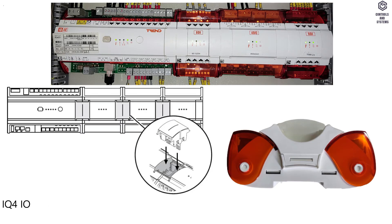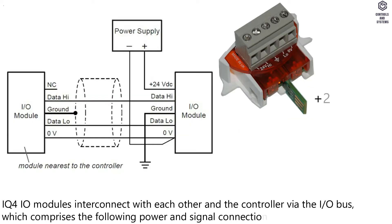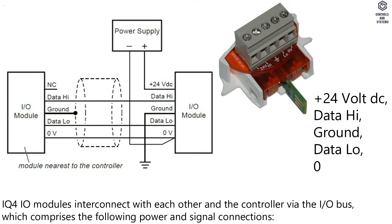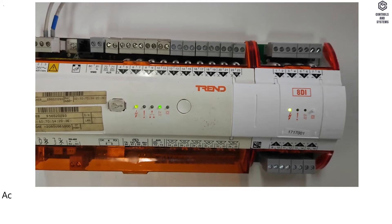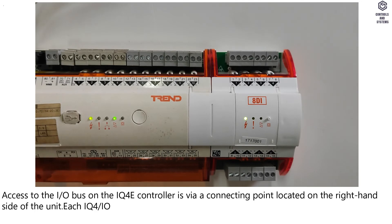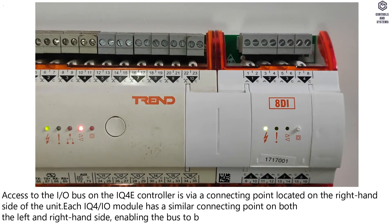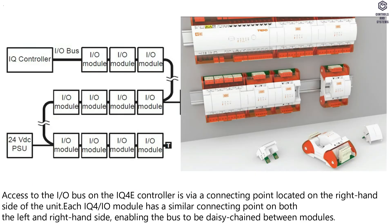IQ4IO modules interconnect with each other and the controller via the I/O bus, which comprises the following power and signal connections: +24V DC, data high, ground, data low, and 0V. Access to the I/O bus on the IQ4E controller is via a connecting point on the right-hand side of the unit. Each IQ4IO module has a similar connecting point on both the left and right-hand side, enabling the bus to be daisy-chained between modules.